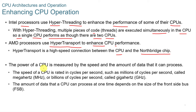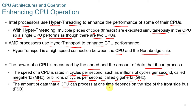The power of a CPU is measured by speed and the amount of data it can process. CPU speed is rated in cycles per second: megahertz (MHz) for millions of cycles per second, or gigahertz (GHz) for billions of cycles per second. The amount of data a CPU can process at one time depends on the size of the front-side bus, or FSB. Overclocking is a technique used to make a processor work faster than its original specification, but it is not recommended and can result in damage to the CPU.